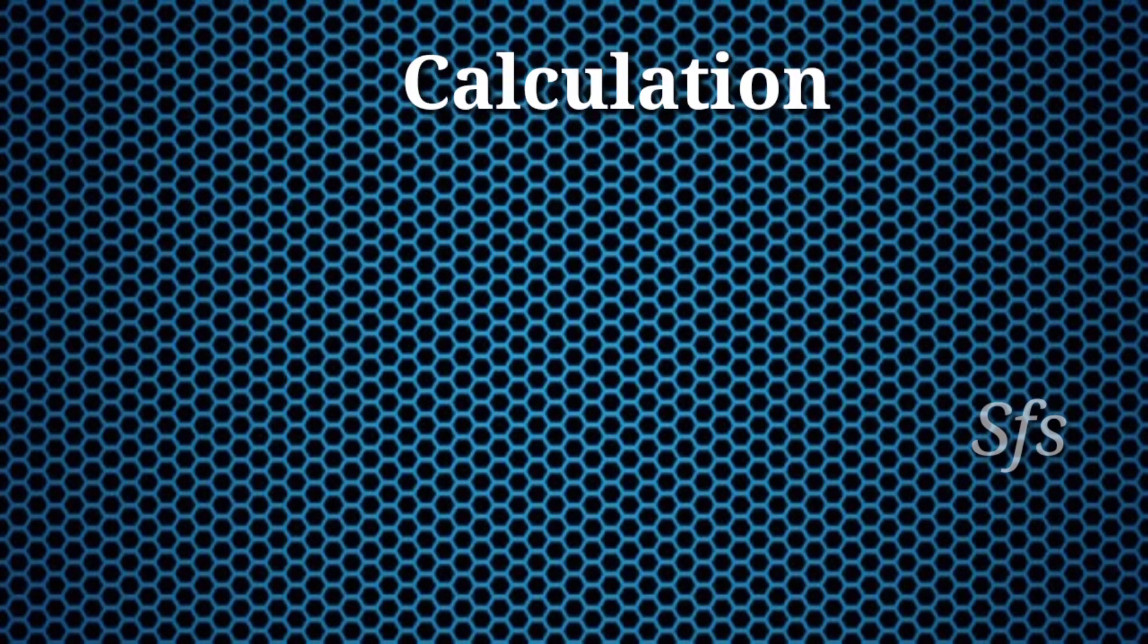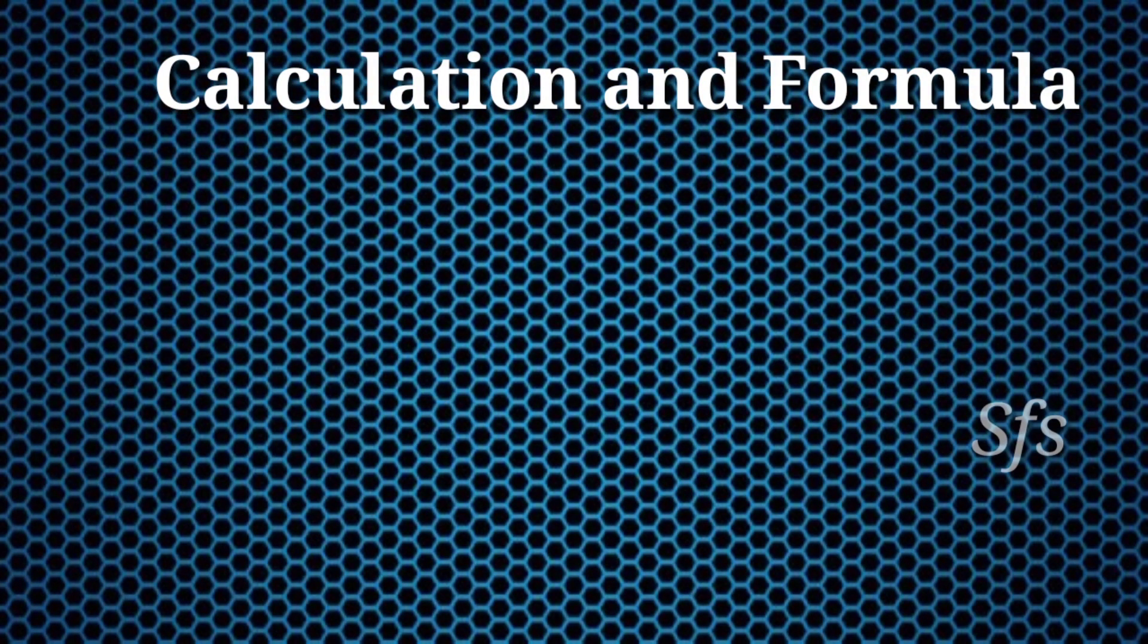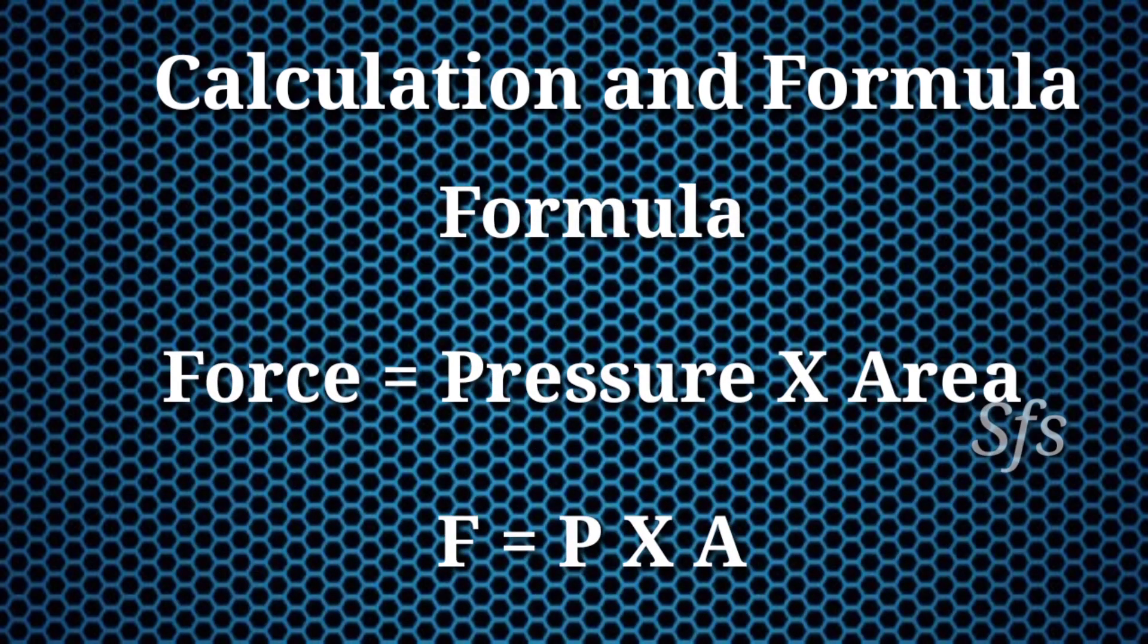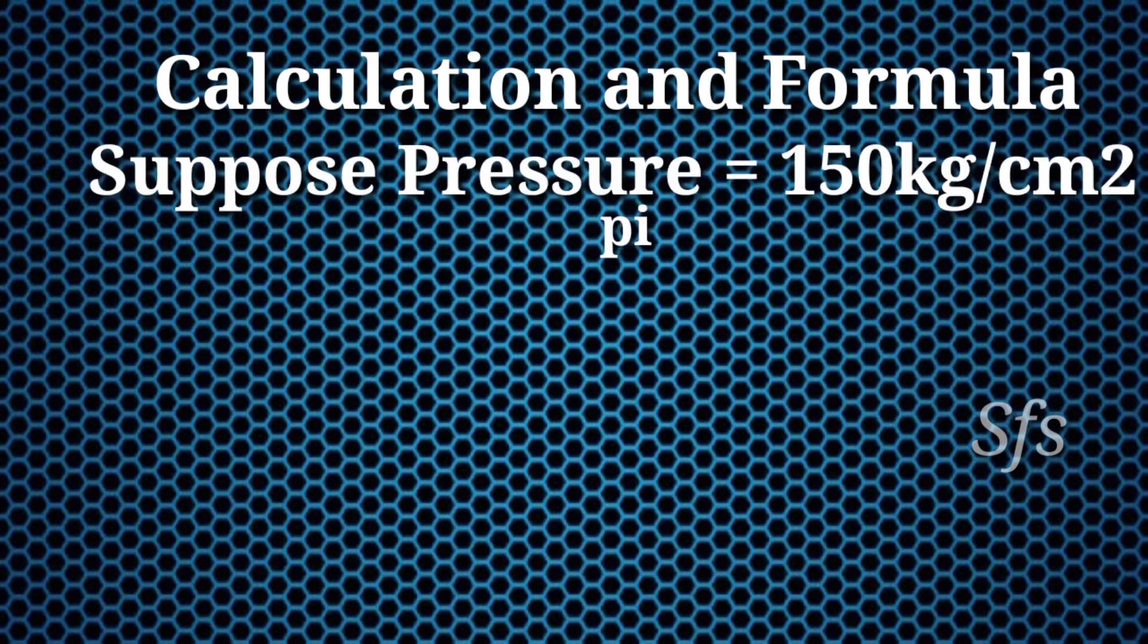Let's start our calculation and formula. The formula for force calculation is: Force equals pressure multiply by area. Pressure is the pressure of the working fluid, means hydraulic oil which is used in the cylinder, and area is the area of the piston.